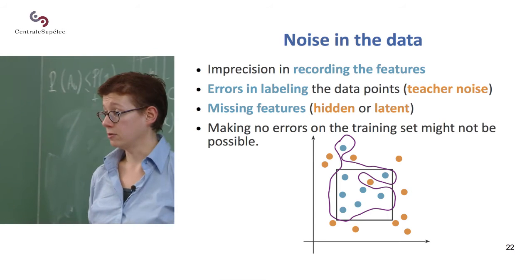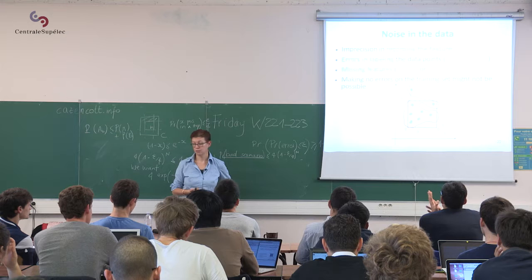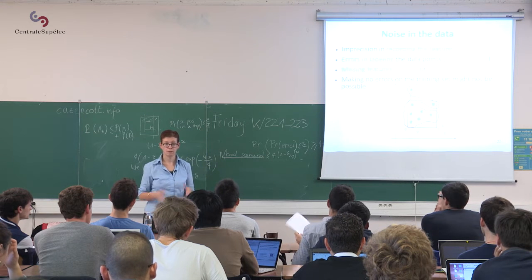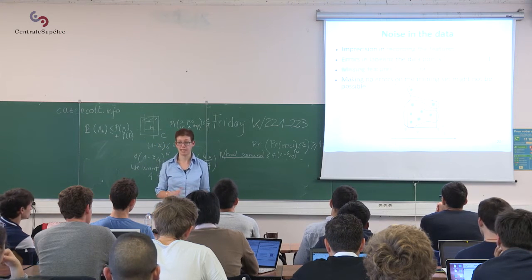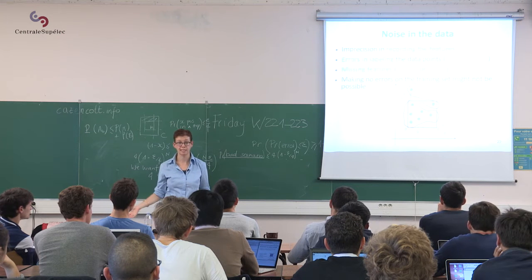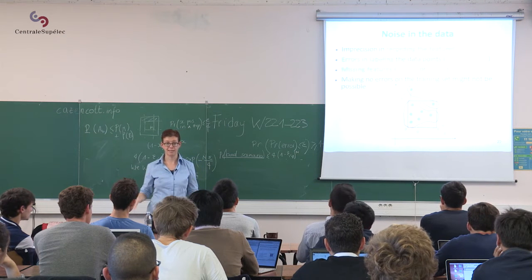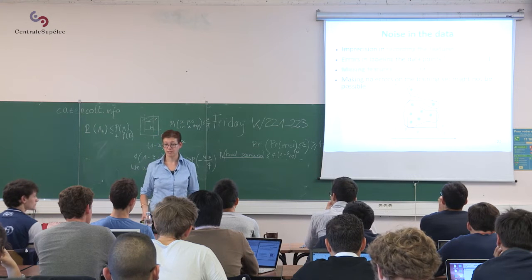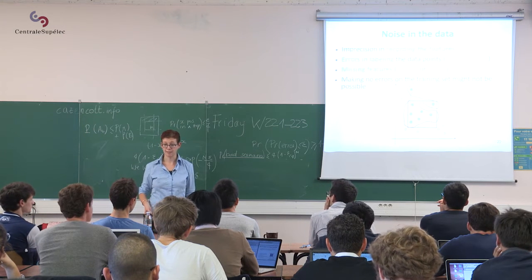You can also have errors in labeling the data points. So someone, say this person didn't have cancer, but it turned out that two months later, this person declared a cancer. Then this person should have been labeled positive, but we didn't know that at the time.